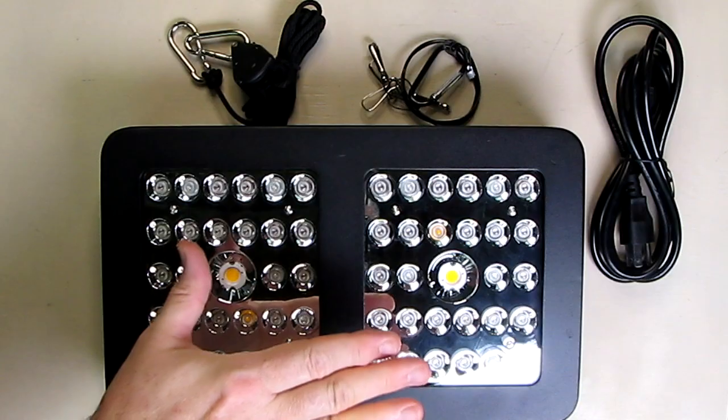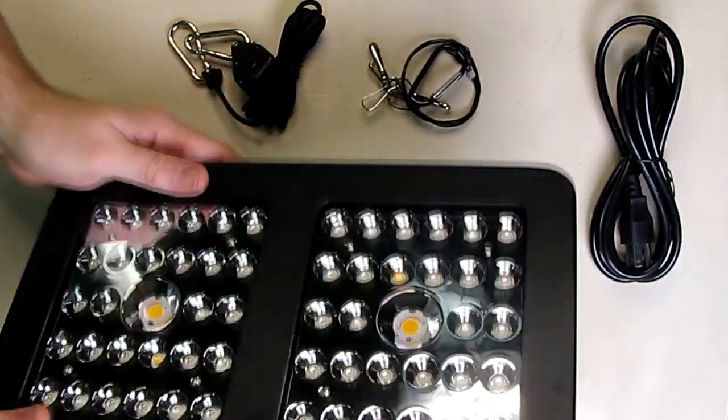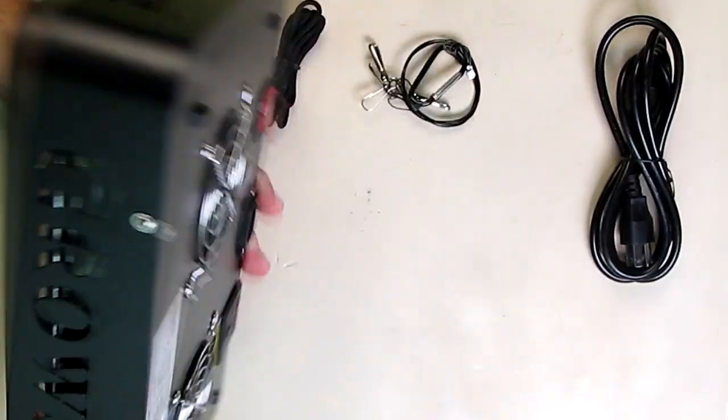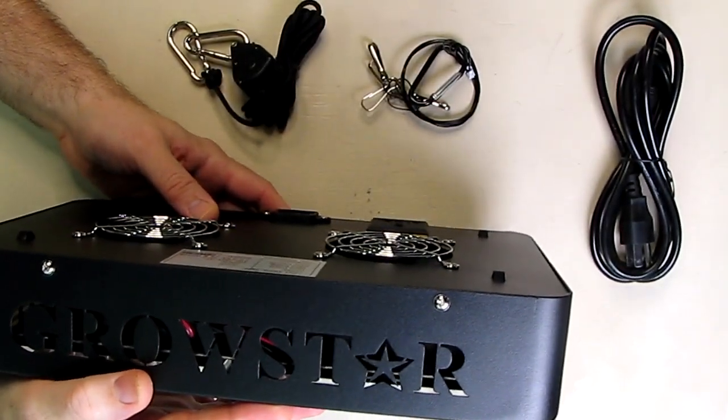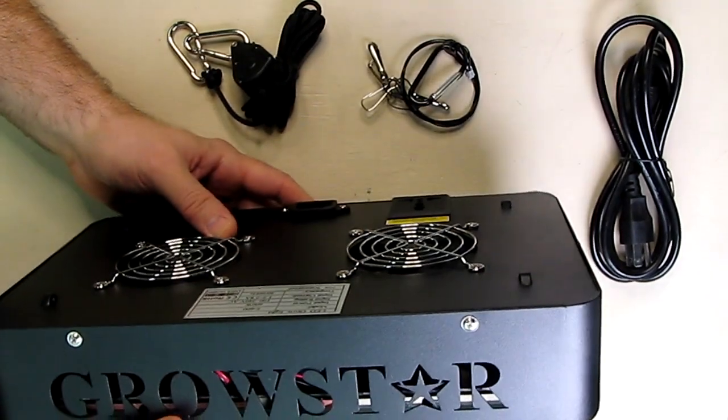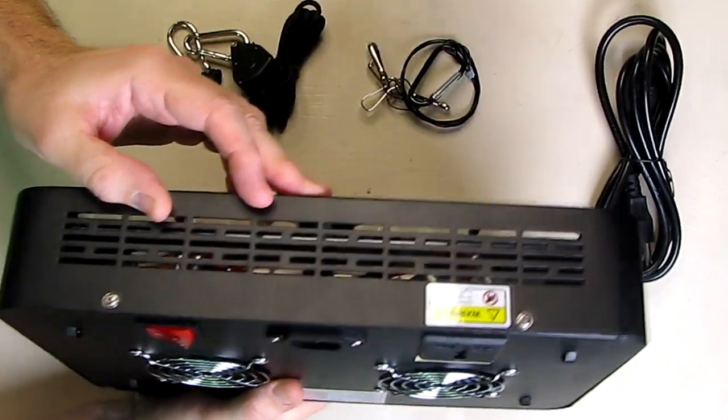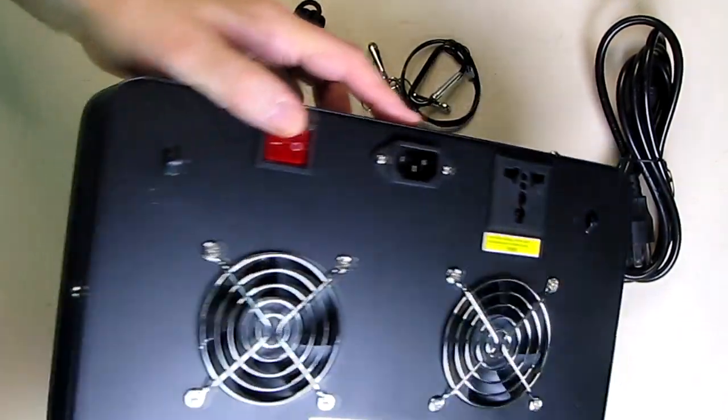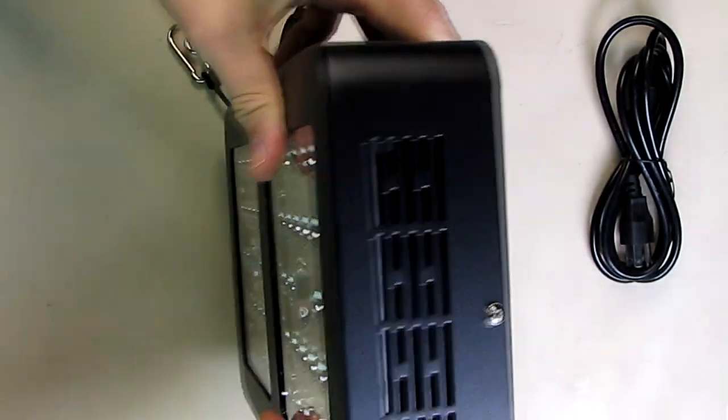Very easily for the different stages of growth. I think all these lights should have this, so it's very nice that it has it. Now on the front you can see it has the company name right there, GrowStar. Also notice it has cooling ventilation all the way around the sides, even on corners right here.